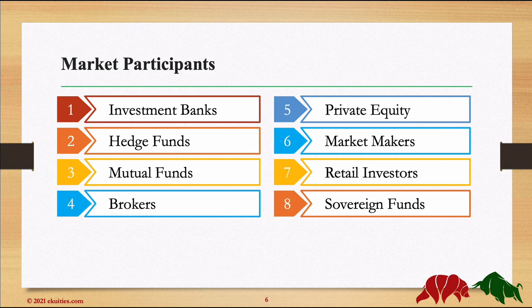Next, the market makers. The bid and ask quotes you see on any trading security are usually created by market makers. They are ready to buy at one low price and sell at another high price. Retail investors are speculators who are willing to take risks to earn profit — and that's us, me and you and people like us.